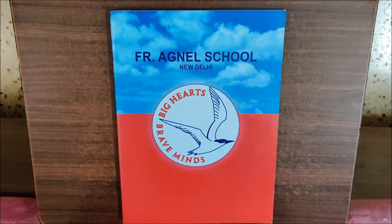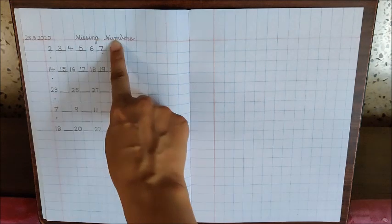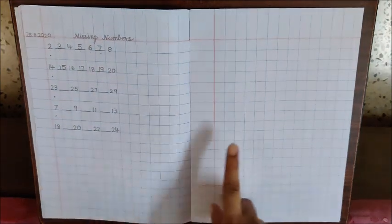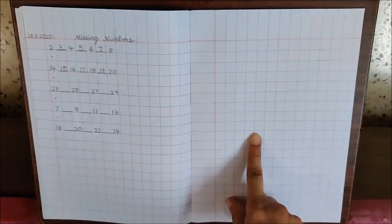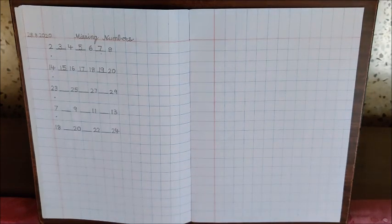So open a new page. Last time we did missing numbers on this page. So here we will do setting for tomorrow's class. Children, today is the last day of the month August. And from tomorrow, a new month starts. What comes after August children? September. Tomorrow is September 1, 2020.